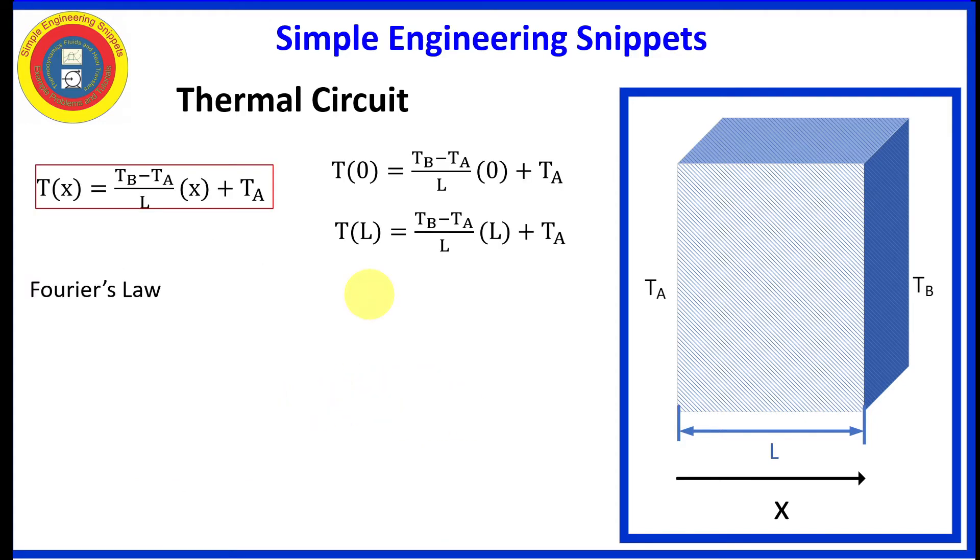That's the temperature distribution through the slab. Now let's use Fourier's law to find the heat transfer through this slab. So Fourier's law says that the heat flux is equal to minus times the conductivity times the derivative of temperature with respect to x.